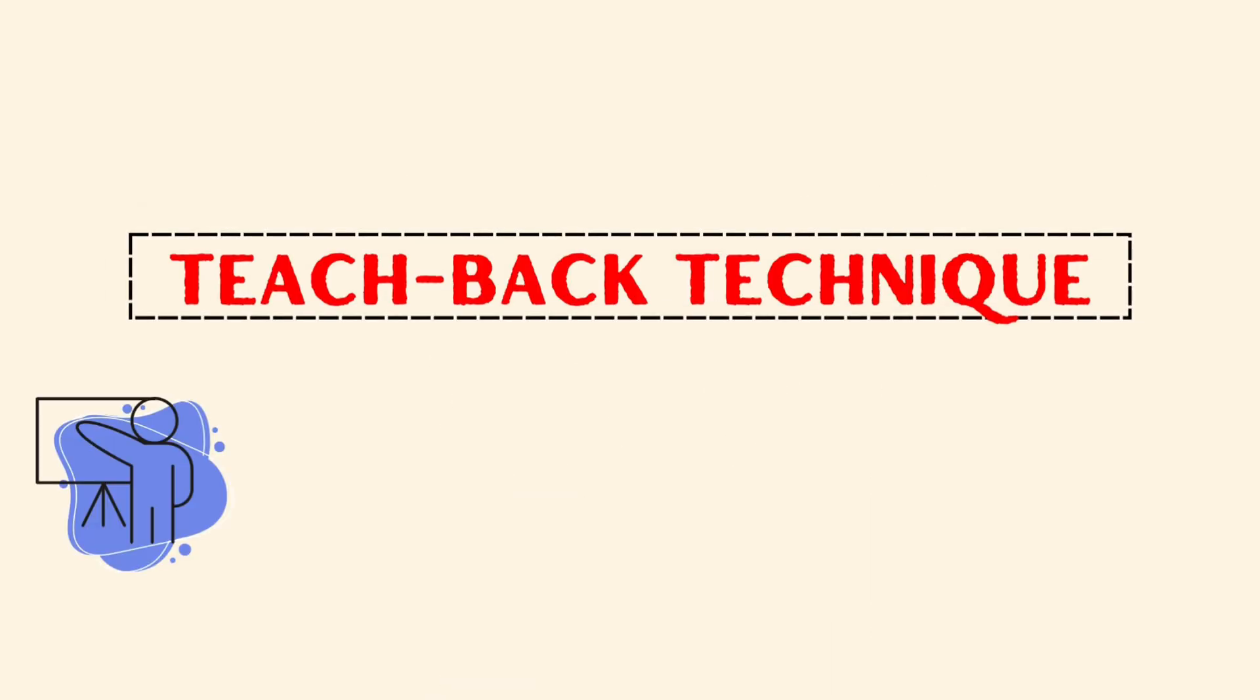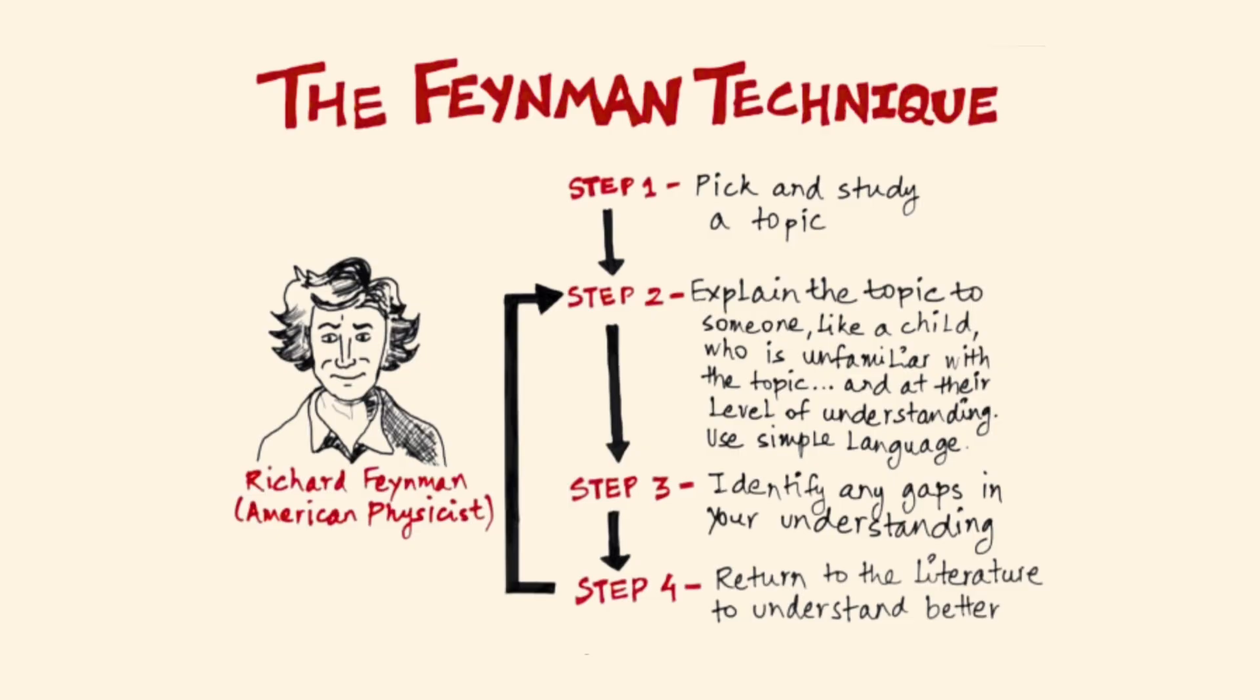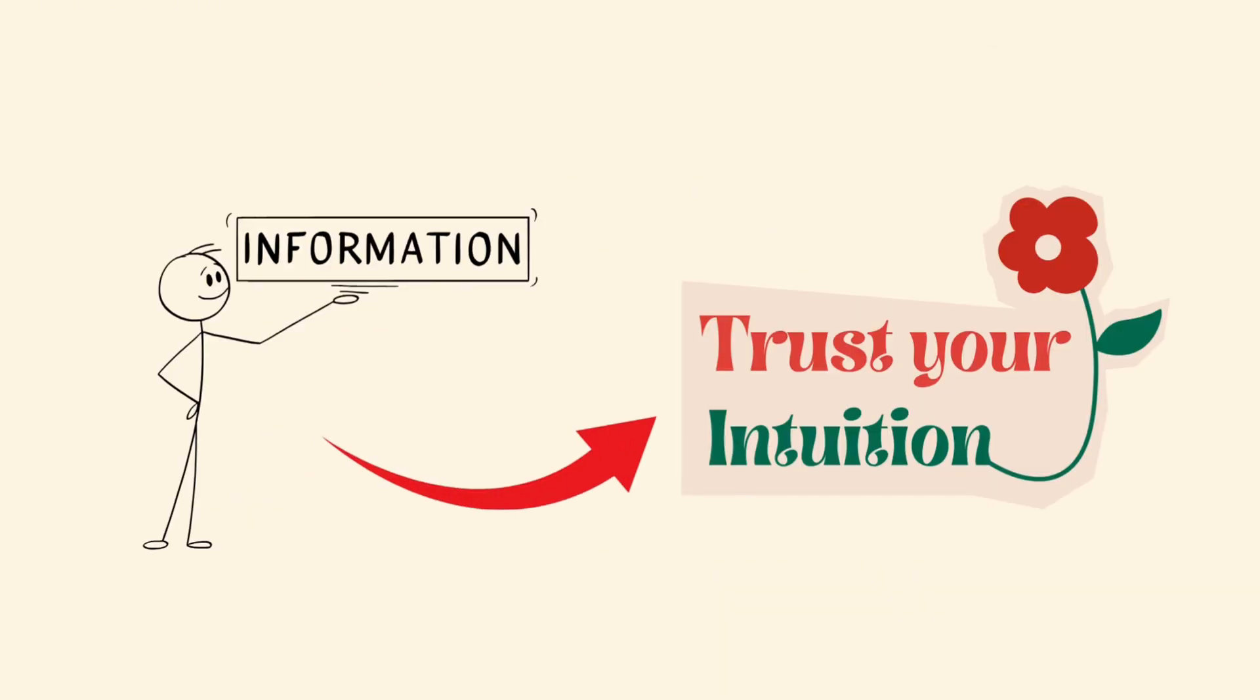Teach back technique. Turn learning into mastery. Every evening, Ethan picks one thing he learned and explains it out loud, as if teaching a child. It's called the Feynman technique, and it's one of the fastest ways to turn information into intuition.